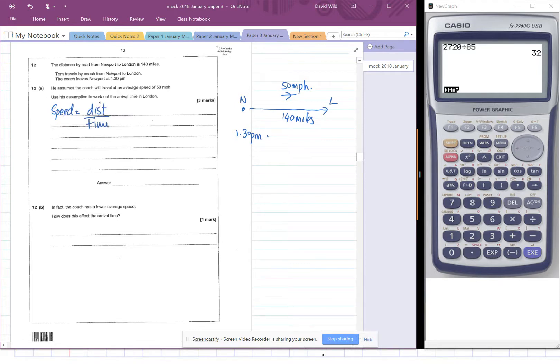And we want to calculate the time. So we multiply both sides by time. So that means speed times time is distance. And then we're going to divide both sides by speed. So the time is the distance over the speed. Now the distance that we're traveling is 140 miles, and the speed that we're going is 50 miles per hour.